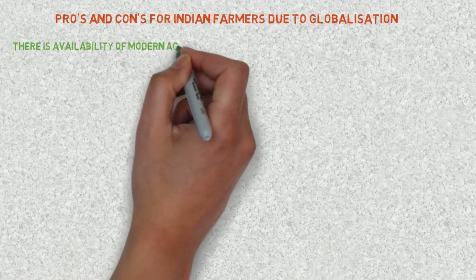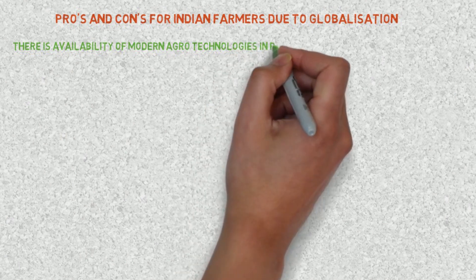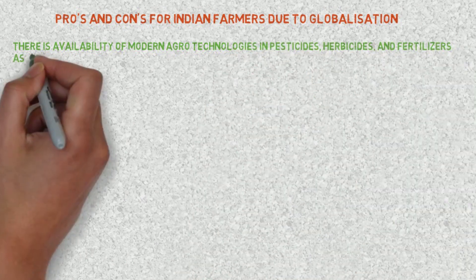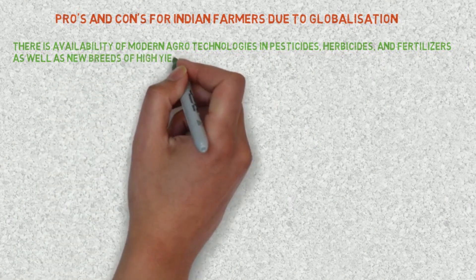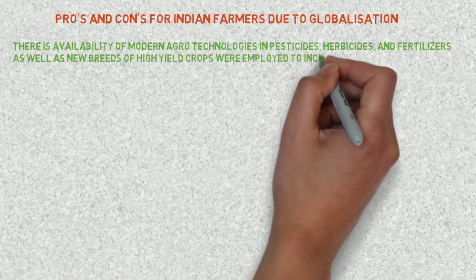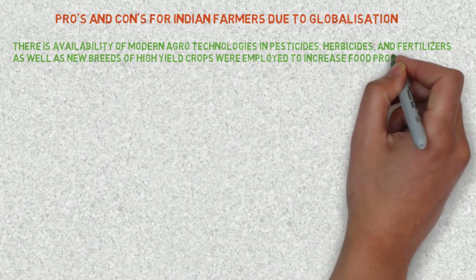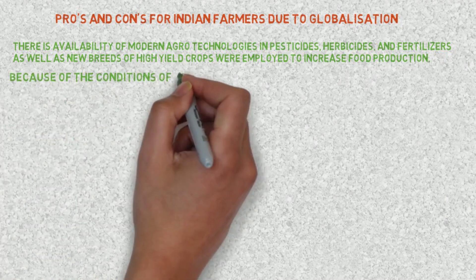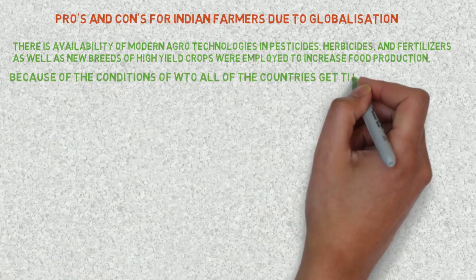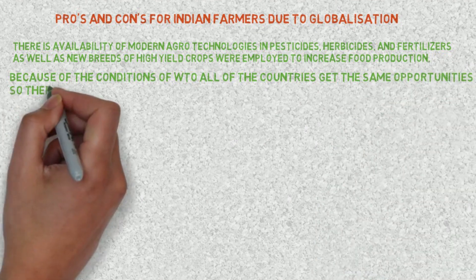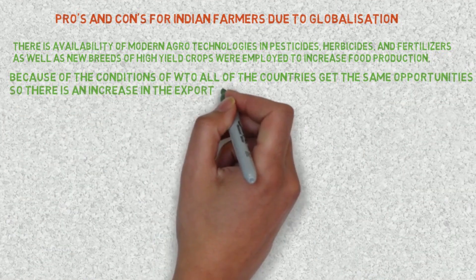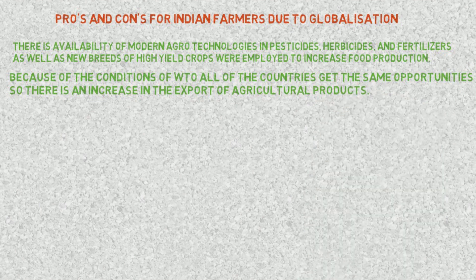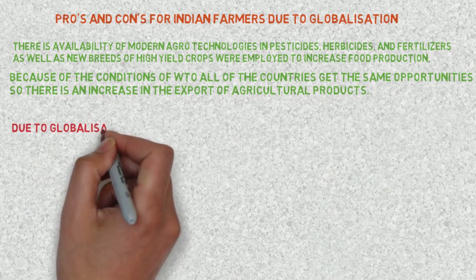Pros: There is availability of modern agro-technologies in pesticides, herbicides, and fertilizers, as well as new breeds of high-yield crops, which were employed to increase food production. Due to globalization, all countries get the same opportunities, so there is an increase in the export of agricultural products.